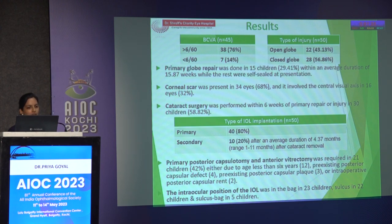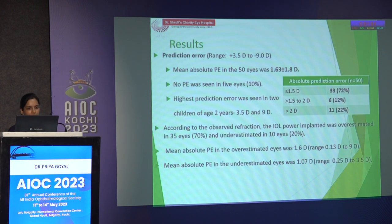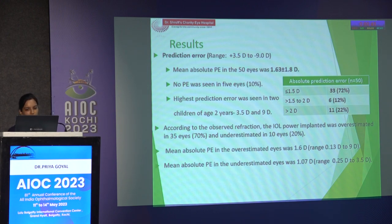Corneal scar was present in 34 eyes, with visual axis involvement in 16 eyes. Cataract surgery was performed within 6 weeks of trauma or repair in some children, with the rest having surgery later. Primary implantation was done in 40 eyes and secondary implantation in 10 eyes with an average duration of 4.3 months. PPC and vitrectomy were required for children under 6 years or with pre-existing defect or capsular plaque at the PC. Prediction error values ranged from +3.5 to -9 diopters with a mean of 1.63. No prediction error was seen in 5 eyes; highest prediction error was in the youngest children aged 2 years.